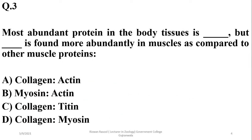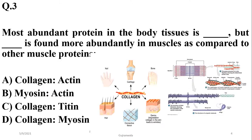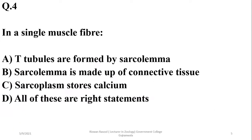The most abundant protein in body tissues is collagen, but the most abundant protein found in muscles is myosin. So the right option is delta. Collagen is abundantly found in different body tissues, while in muscles, thick filaments or myosin protein is the major protein.